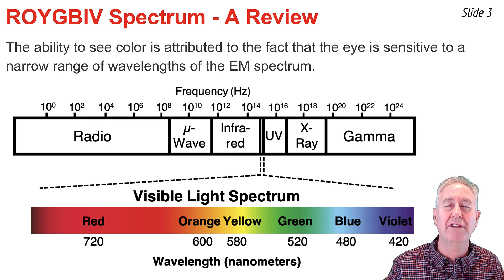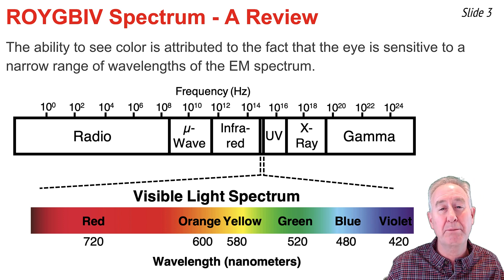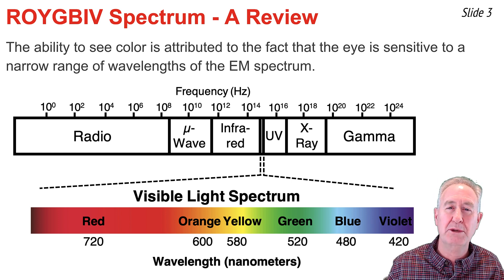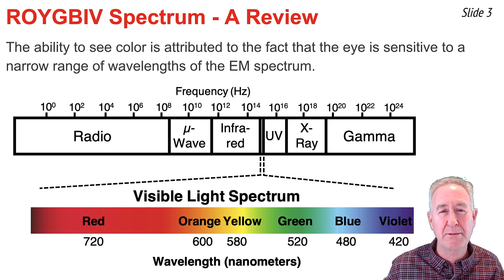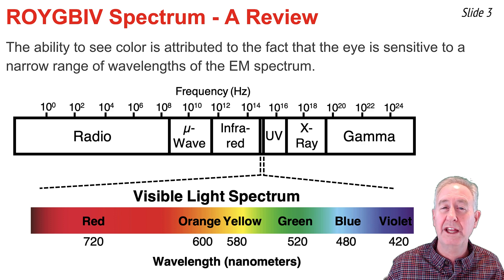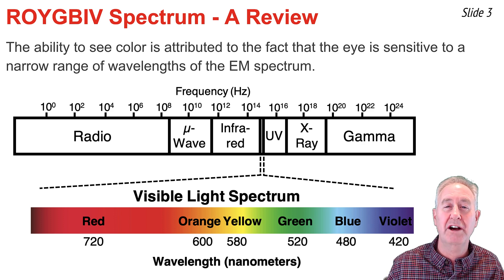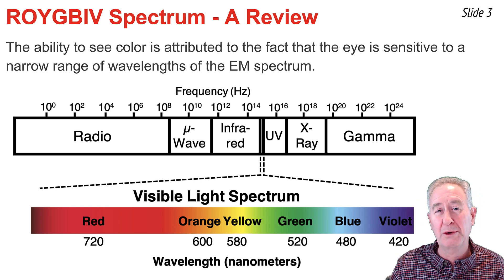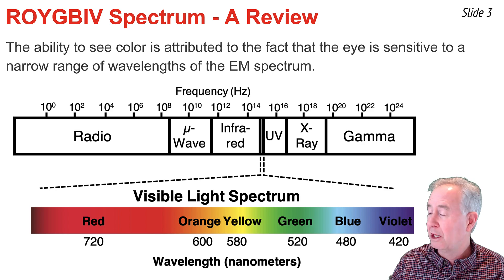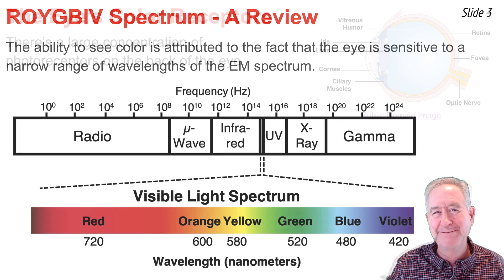Each wavelength is associated with a color. We can remember the colors of the visible light spectrum and their ordering by the familiar name ROYGBIV, where each letter of ROY's name represents a color: red, orange, yellow, green, blue, indigo, and violet.